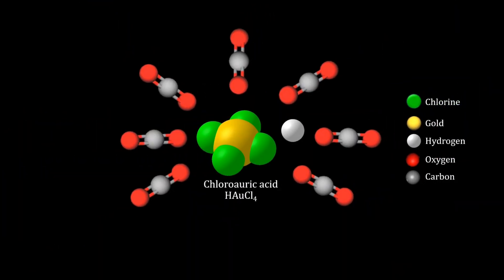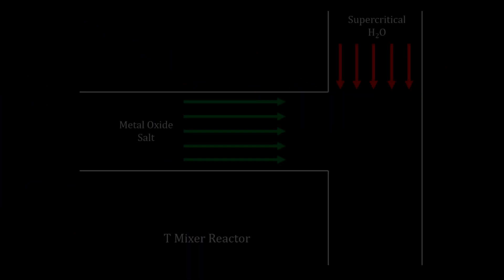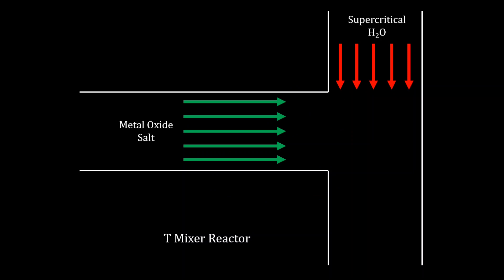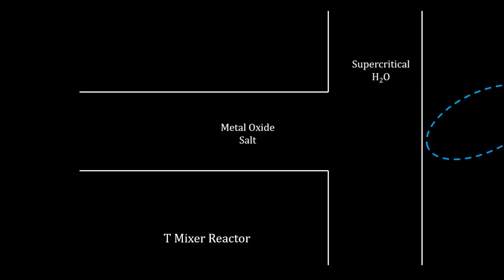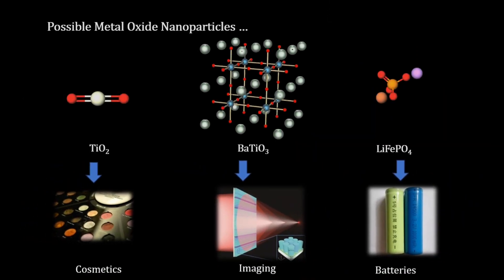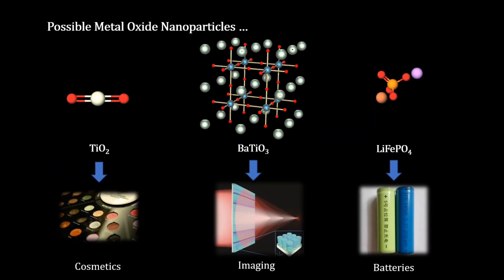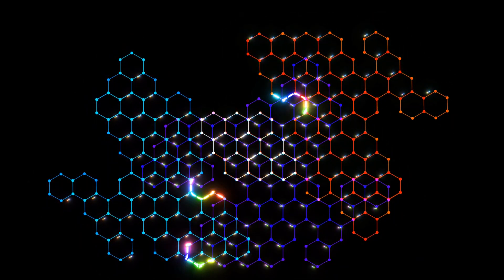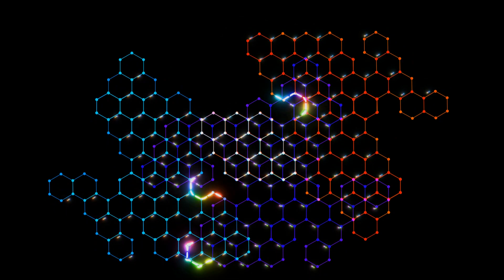For instance, supercritical CO2 serves as a green solvent to dissolve metal precursors, facilitating fine-tuning of nanoparticle size and morphology applicable in catalysis and drug delivery. Supercritical water rapidly hydrolyzes metal salts, yielding well-defined metal oxide nanoparticles with advantages like high purity and minimal waste. Supercritical fluids are transforming nanoparticle production.